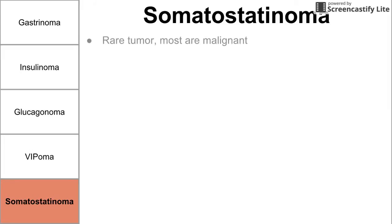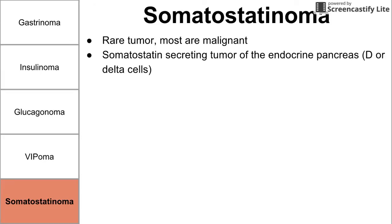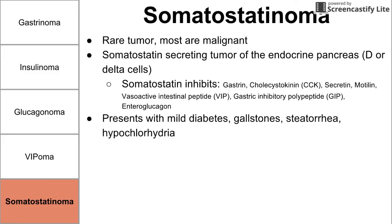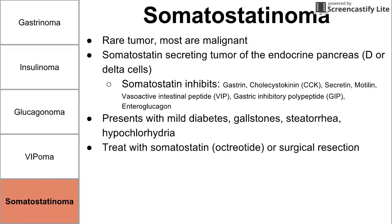Lastly, we have somatostatinoma — also a rare tumor, and most are malignant. Somatostatin is secreted from these tumors of the endocrine pancreas, coming from the D or delta cells. Recall: insulinoma came from beta cells, glucagonoma from alpha cells, VIPoma from D1 cells, and somatostatinoma from D cells. Somatostatin inhibits a bunch of hormones including gastrin, cholecystokinin, secretin, motilin, VIP, GIP, and enteroglucagon — making it the universal inhibitor. Because of that, it presents with a variety of symptoms including mild diabetes, gallstones, steatorrhea, and hypochlorhydria (low HCl). To treat this one, you use somatostatin to try to reverse the effects.